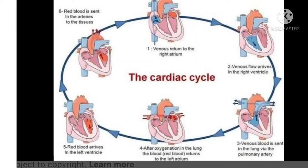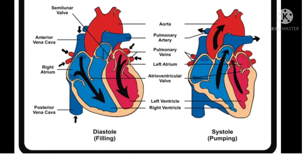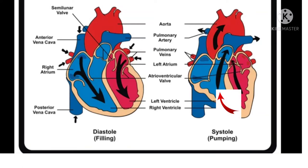The sequential events in the heart which are cyclically repeated are called the cardiac cycle. It includes an active phase called systole and a resting phase called diastole of the atria and ventricles. The whole process is completed in approximately 0.8 seconds. The time needed for atrial contraction is 0.11 to 0.14 seconds. The time needed for ventricular contraction is 0.27 to 0.35 seconds.